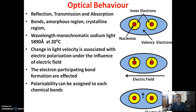You can see three figures. In one figure, you see two different atoms which are very close to each other. They have their inner electrons, and by the presence of these inner electrons they are forming a valency. The valency electrons are shown in blue. An electric field is generated by the presence of these two atoms.